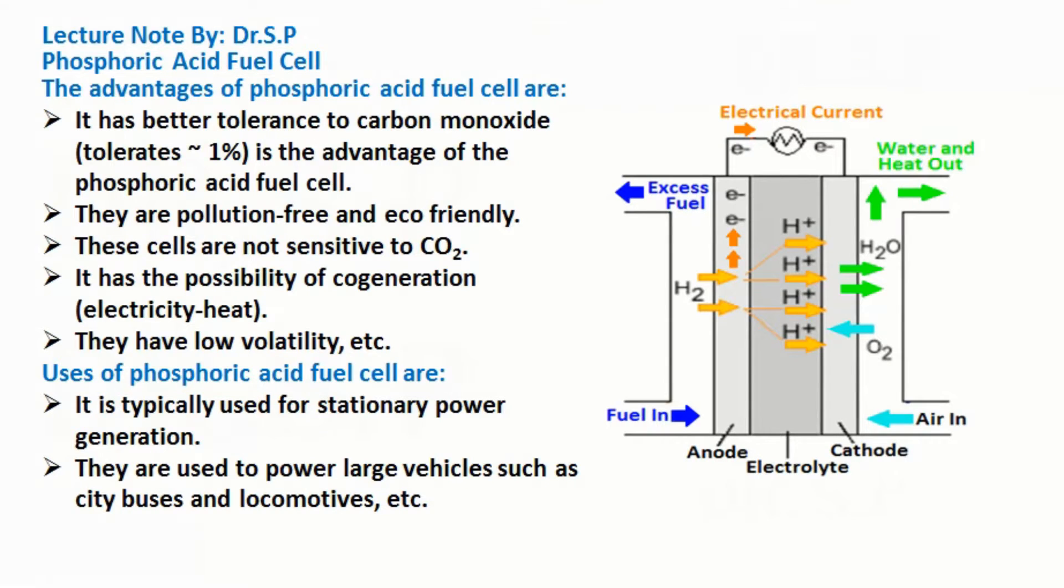The advantages of Phosphoric Acid Fuel Cell are: it has better tolerance to carbon monoxide, tolerates similar to 1%, which is an advantage. They are pollution-free and eco-friendly. These cells are not sensitive to CO2. It has the possibility of cogeneration, electricity to heat, and they have low volatility.